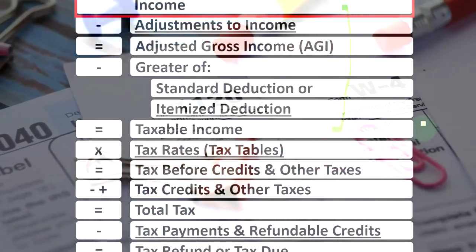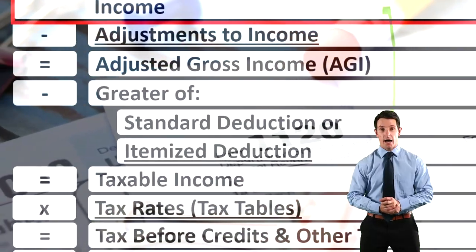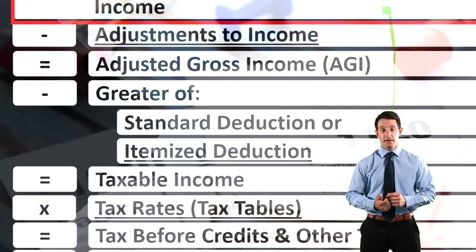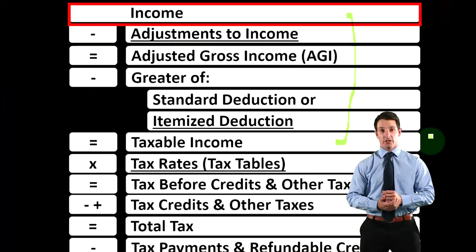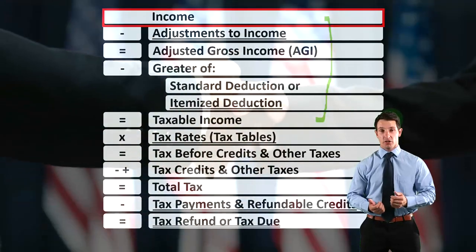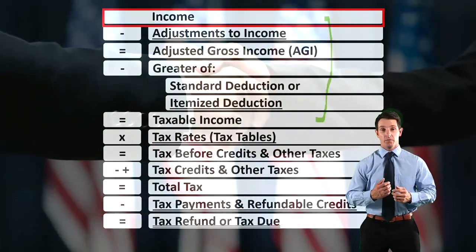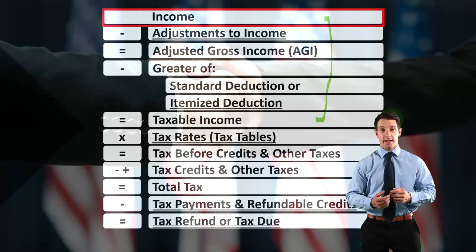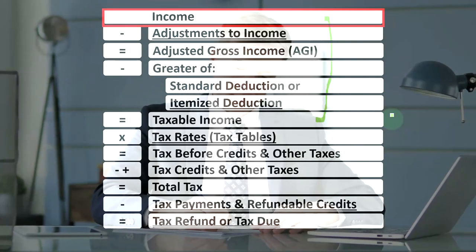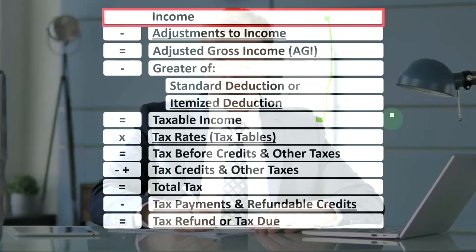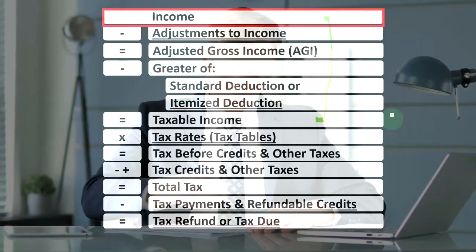Remember that the government doesn't just want those forms so that they can provide them to you so that you can self-report. Those forms are also going to the government, so we've got to remember that the government is holding on to these forms as well. That's basically their goal — they want to get to the point where they can essentially create the tax return by themselves by having the documentation they're getting from the payer side of the business transactions.